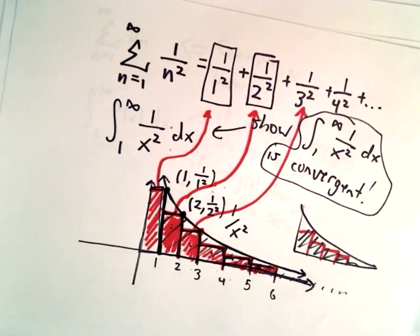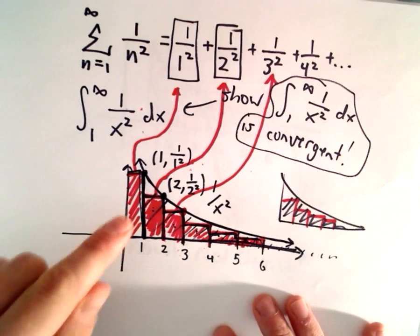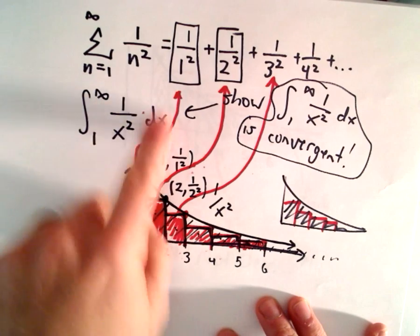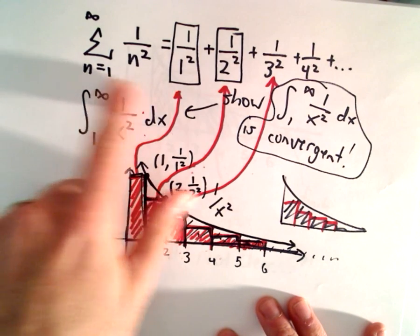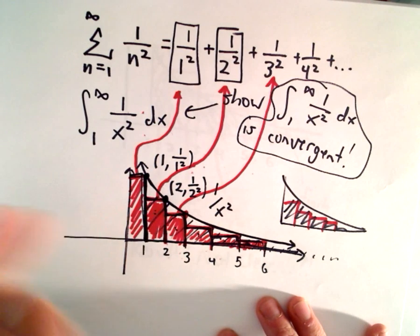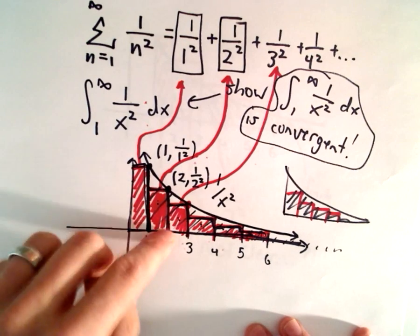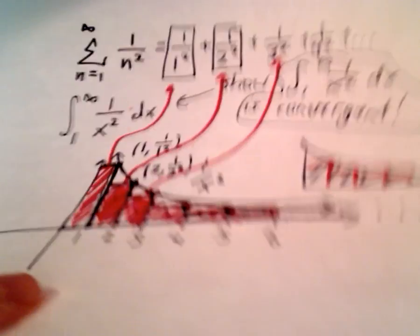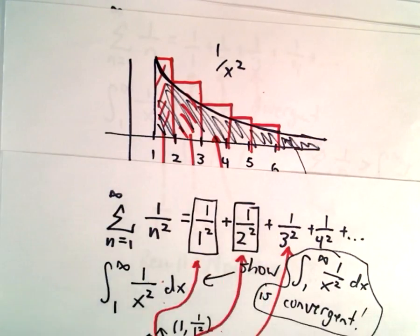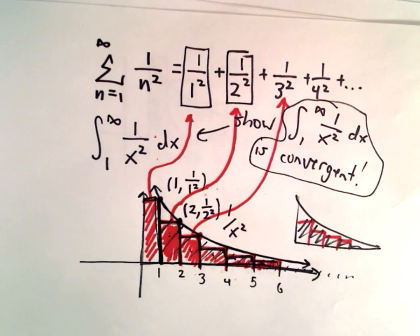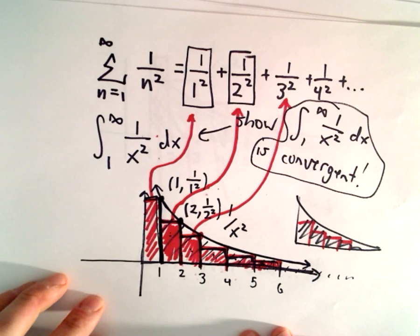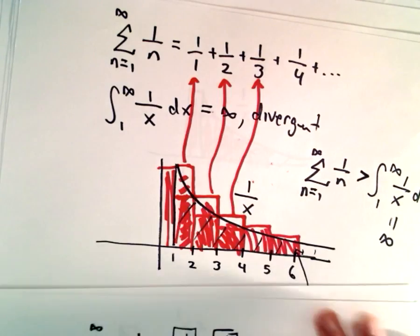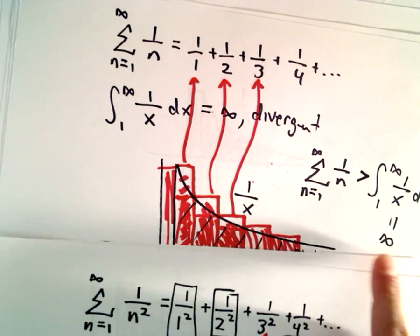That's the basic idea with the integral test for series — you're just making a basic geometry argument. Either the areas of the boxes have to be smaller than something finite, so they're finite too; or the areas of the boxes are larger than something already known to be infinite, so they must also be infinite. By drawing the rectangles cleverly, you can always make a clear argument based on whether your integral converges or diverges.